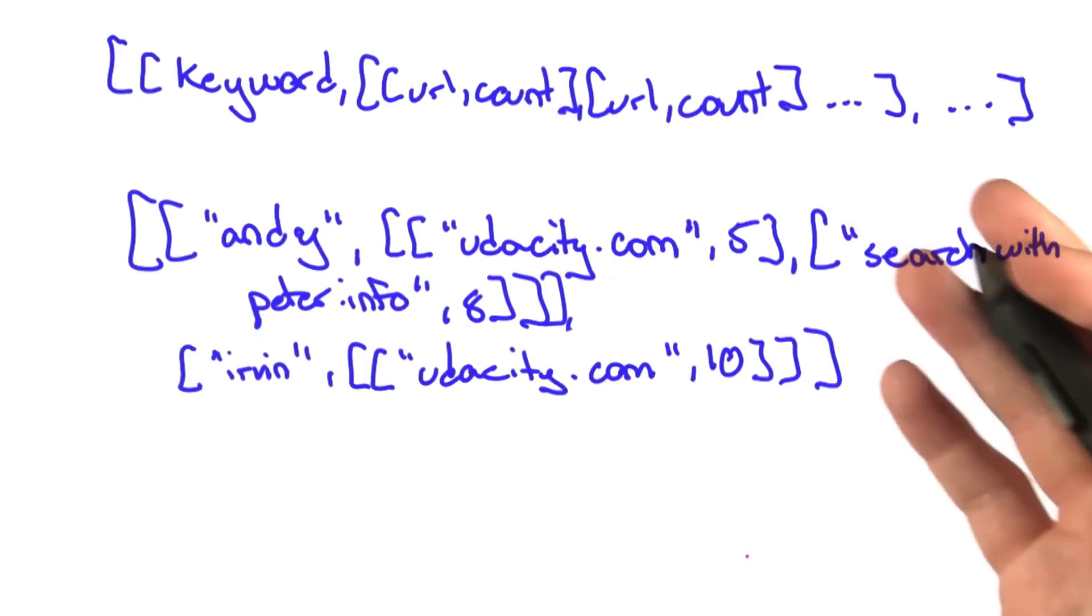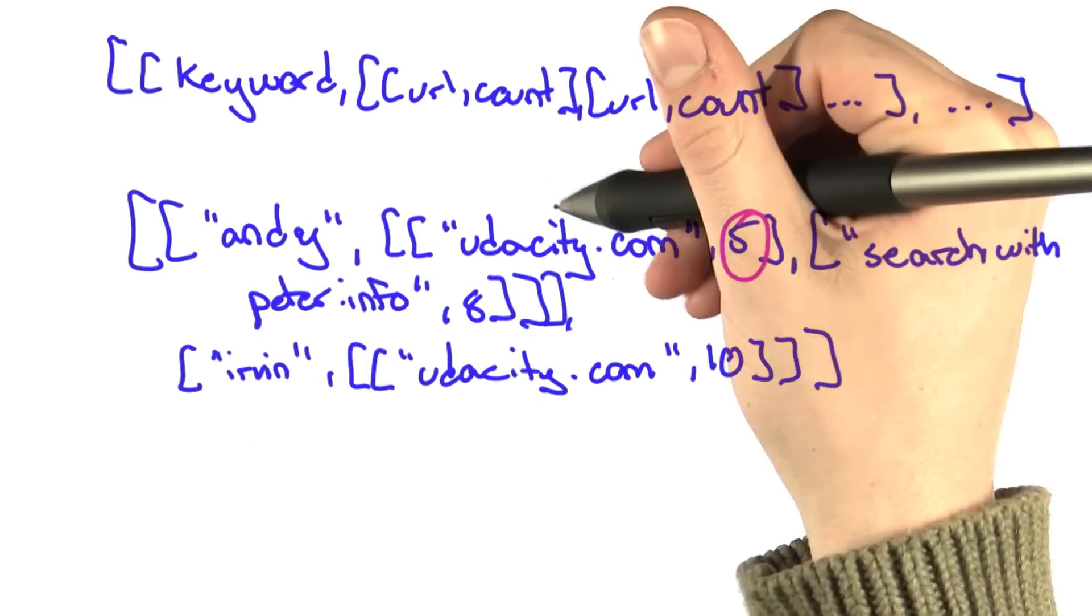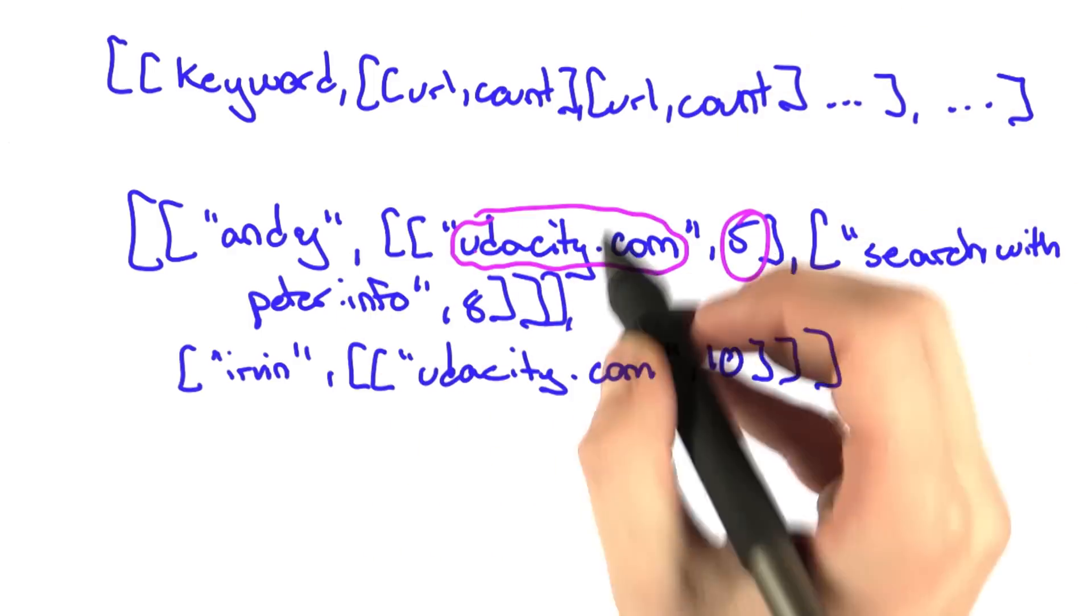Here I've enumerated the second choice. What's useful about this is that we have a count for each URL in each keyword. This allows us to sort these two URLs.